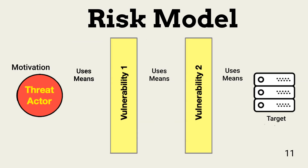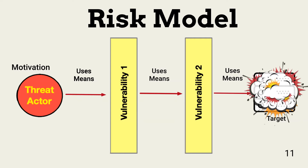Looking at the threat, vulnerability, and impact relationships: a threat actor employs a set of means to exploit one or more vulnerabilities to reach a target. The likelihood that this will happen depends on how weak the vulnerabilities are, the effort needed to exploit them, and the motivation of the attacker. Strong motivation will cause a threat actor to use greater efforts to reach a target.